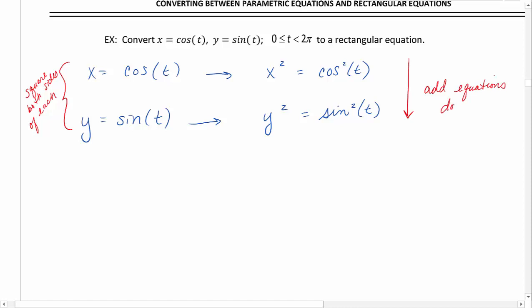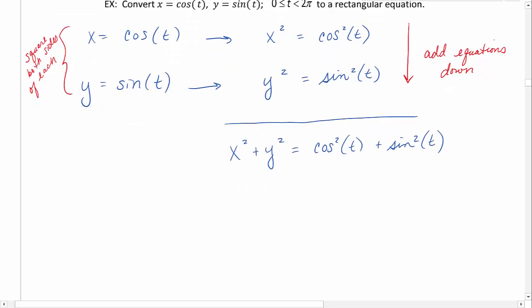We've done this before when solving systems of equations using the addition method. So if we add down, I'm going to have x squared plus y squared equals cosine squared plus sine squared. Cosine squared plus sine squared is one of our Pythagorean identities. That's equal to one.